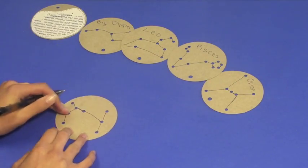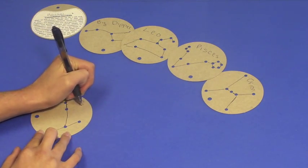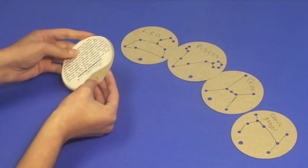Once all of the disks are complete, stack them together with the name on top, aligning the large holes that are independent from the constellations.